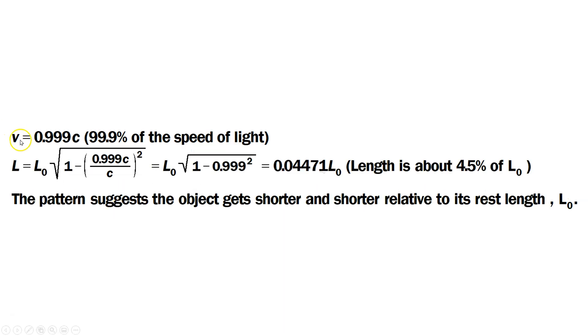Now look what happens when v is 0.999c, 99.9% of the speed of light. You go through a similar calculation, you can pause the video and read through it. In that case, the length is about 4.5% of the rest length. In other words, if it's 100 centimeters, it would be only 4.5 centimeters. Think about that - when traveling at 99.9% the speed of light, according to this formula at least.